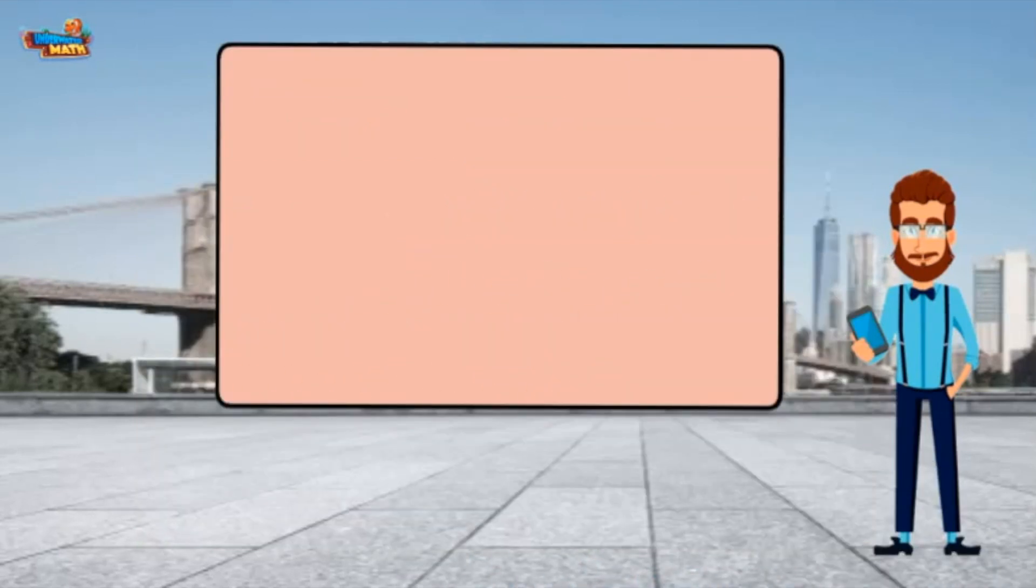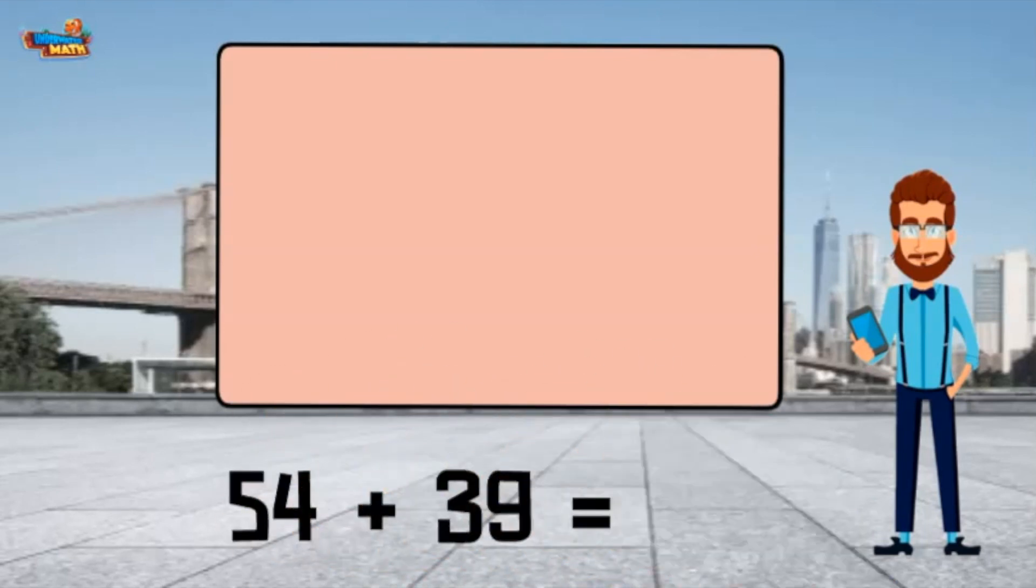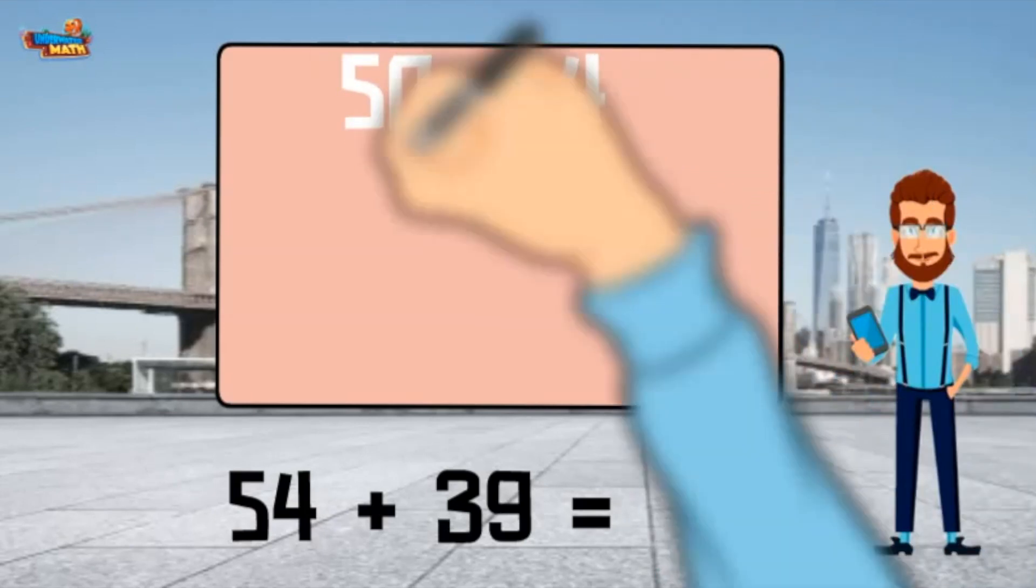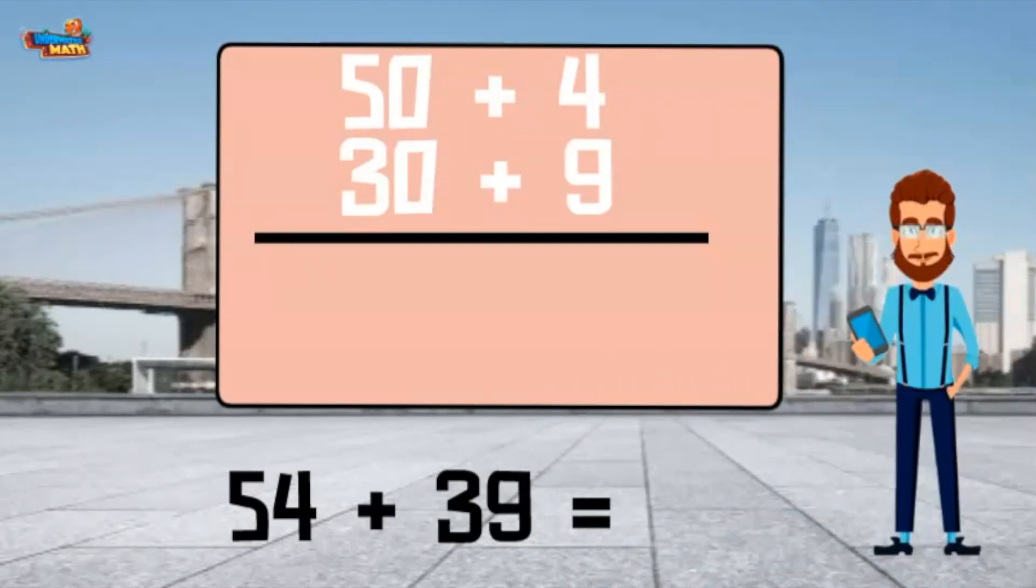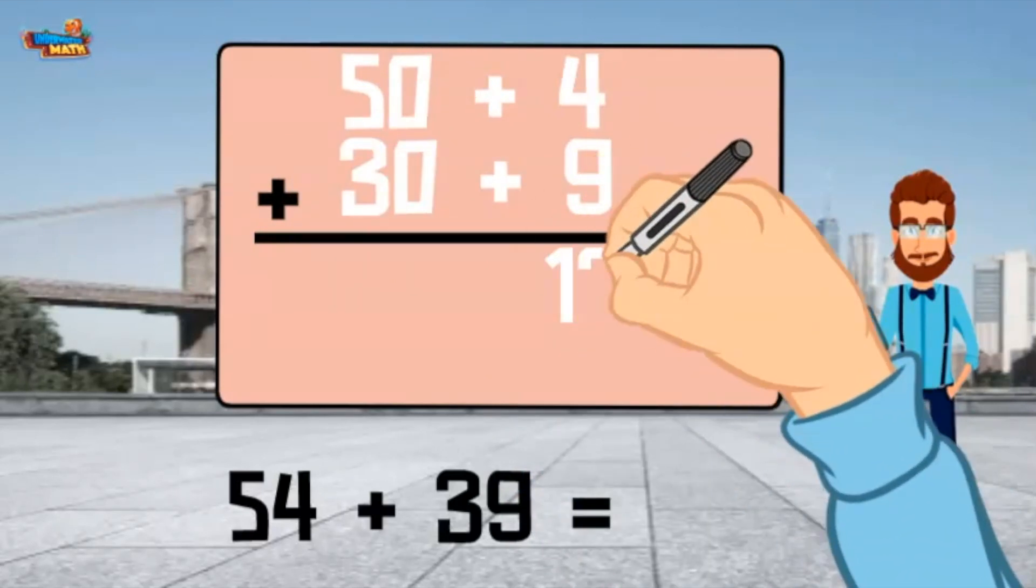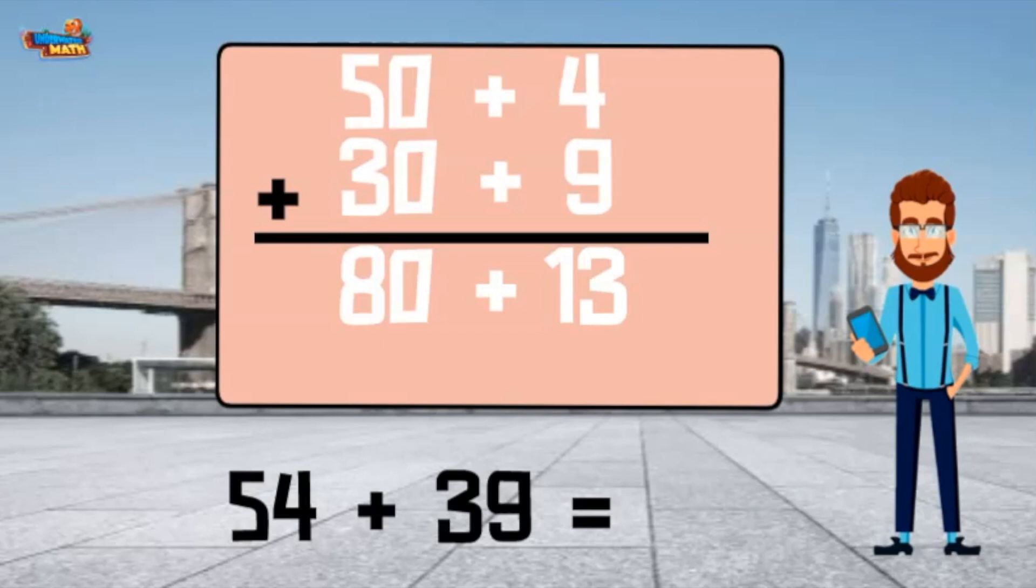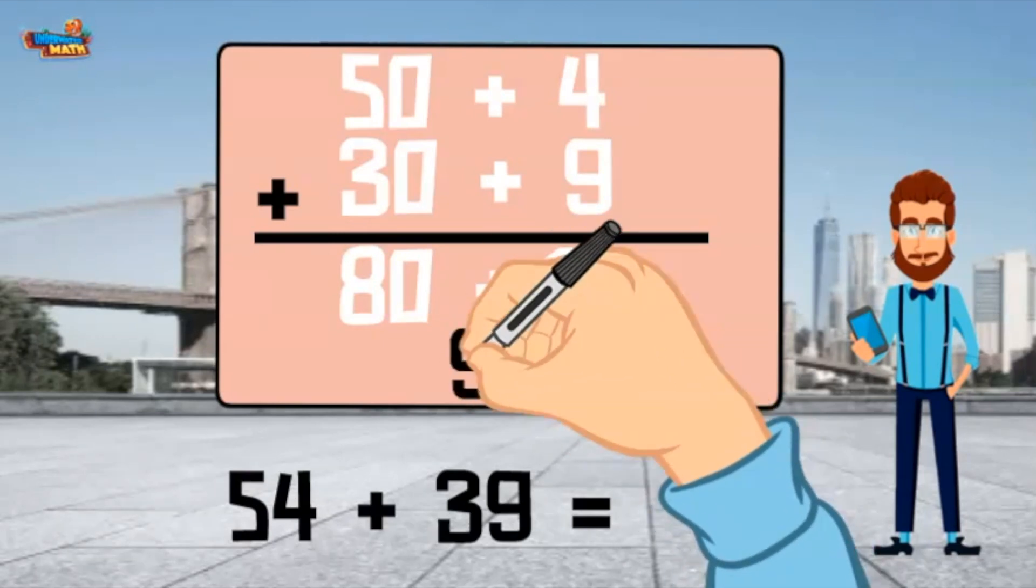Let's add the same numbers, 54 plus 39, using this strategy. Break apart 54 into the sum of 50 and 4. Break apart 39 into the sum of 30 and 9. Add each column. 4 plus 9 equals 13. 50 plus 30 equals 80. Add the row. 80 plus 13 equals 93.